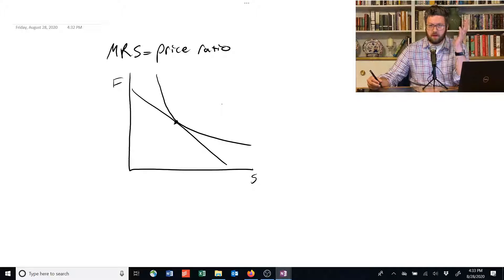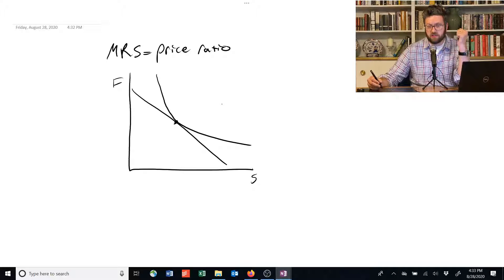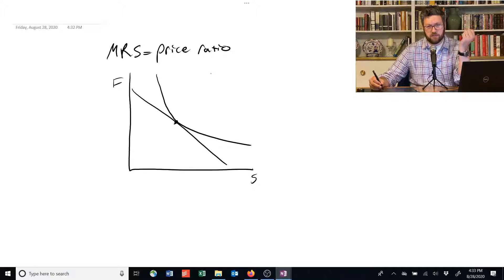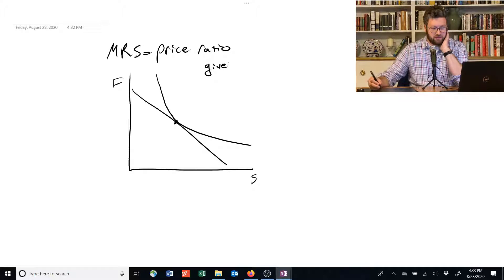So a little more intuition about why the marginal rate of substitution is equal to the price ratio. The price ratio tells you basically if you give up one unit of, say, shelter, how much extra food can you get?